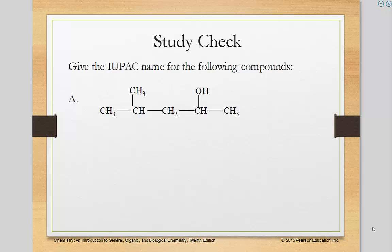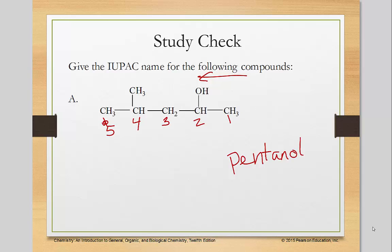Let's try another one. Once again I'm going to count from the right because that's where the OH group is — one, two, three, four, five — so there's five carbons, that's pentane. I drop the E on the end and put OL there instead, so pentane becomes pentanol. The OH is on the second carbon. On the fourth carbon there's a methyl group. So the name is 4-methyl-2-pentanol.